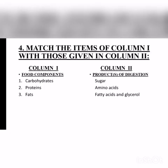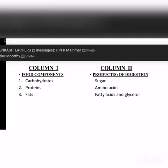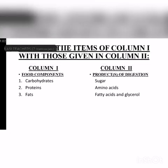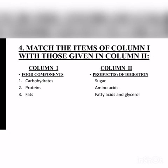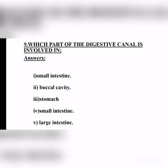Next one: match the items of column 1 with those in column 2. Column 1 is food components, column 2 is products of digestion. First — carbohydrate: correct answer is sugar. Second — protein: answer is amino acids. Third — fat: answer is fatty acids and glycerol.